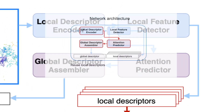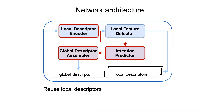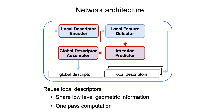To emphasize the key concept of our method, note that our global descriptor assembler is designed to reuse the extracted local features. The idea behind this is that both local and global descriptors depend on the same low-level geometric information. In this way, the assembler can take advantage of the informative local features and produce more discriminative global ones. Also, local and global descriptors can be inferred in one single forward pass, which brings runtime benefits in practical applications.